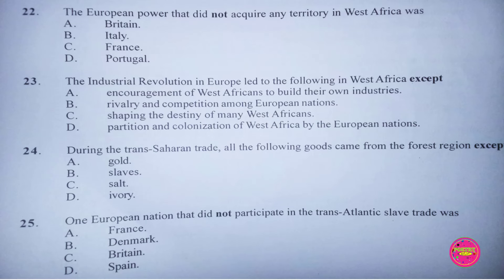Question 25. One European nation that did not participate in the transatlantic slave trade was: A. France, B. Denmark, C. Britain, D. Spain. The correct answer to this question is B. Denmark.